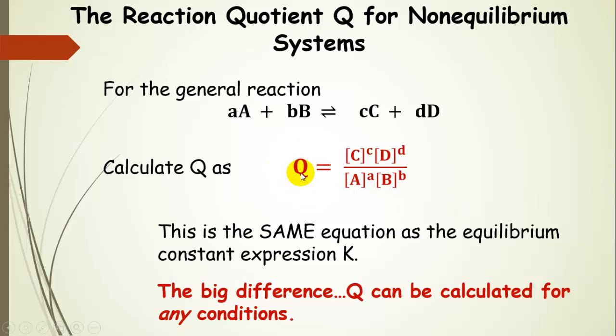instead of K, we're going to have Q. But we use the same setup, so products over reactants, each product and reactant raised to its coefficient power. So the expressions are exactly the same.